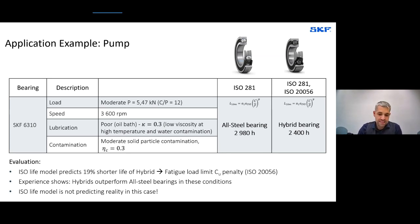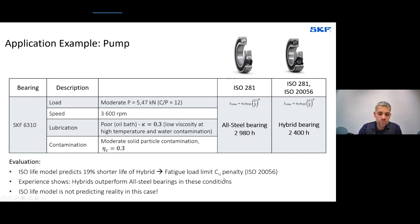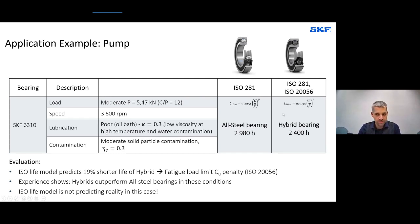With the ISO life model per ISO 281, the all-steel bearing calculates to ~3,000 hours and the hybrid bearing only ~2,400 hours — an 19% disadvantage for the hybrid. The reason is a 2018 ISO standard (ISO 2056) that systematically penalizes all hybrid bearings' fatigue load limit C_u by 15–27%, giving them a lower a_ISO factor. Yet experience clearly shows hybrid bearings outperform all-steel bearings in these conditions — the ISO model is not predicting reality here.